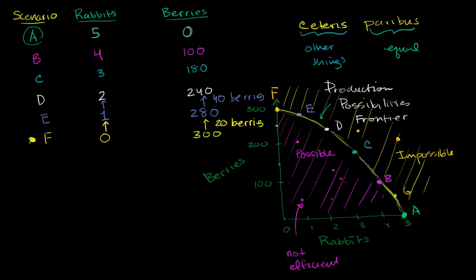Now, let's say we're in Scenario D, and we want even more rabbits. We're really starting to become carnivores now. What am I going to give up? Well, I'm going to give up 60 berries.